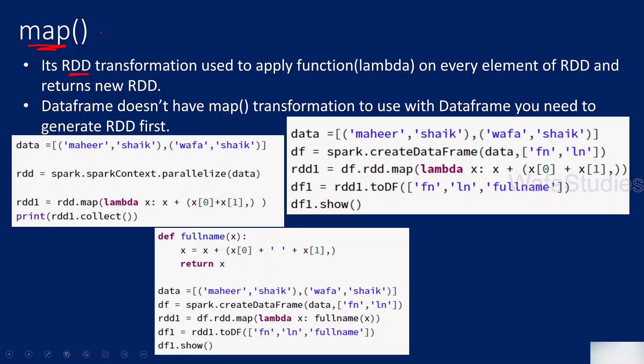Here we are going to discuss about map transformation, which is available only for RDD objects. On top of data frames, there is no map function. We are also going to see a practical example — how we can use this map function to create a new column or to alter a column, applying some kind of transformation using the map function.